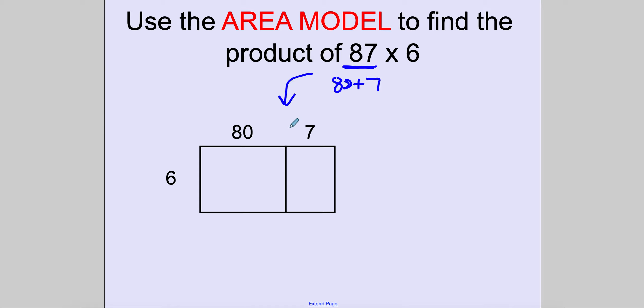And then that gets placed here, 80 plus 7. I'm going to do that times 6. My first box is going to be 6 times 80, which is 480.